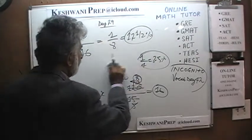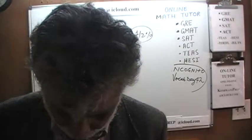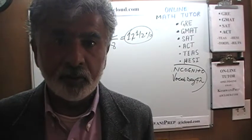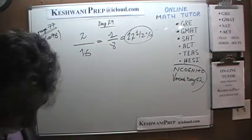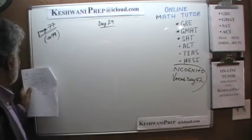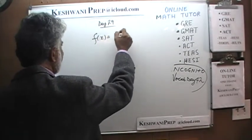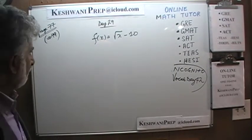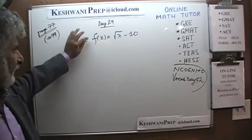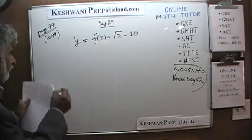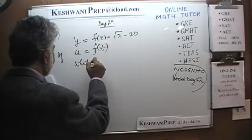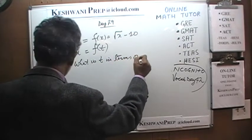This basic fact you should know: 1 quarter is 25 percent, therefore 1 eighth is 12 and a half percent. Number 99. In problem 99 we have a function f(x) equal to the square root of x minus 10. Typically we express that as y equals f(x), y being the dependent variable and x being the independent variable. The question is: if u equals f(t), what is t in terms of u?